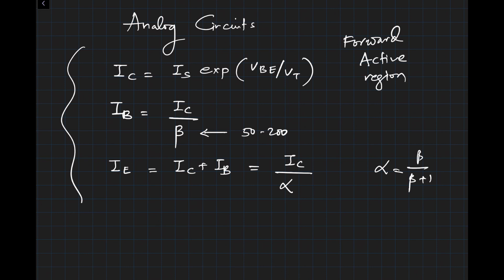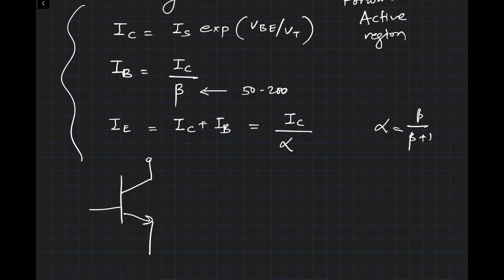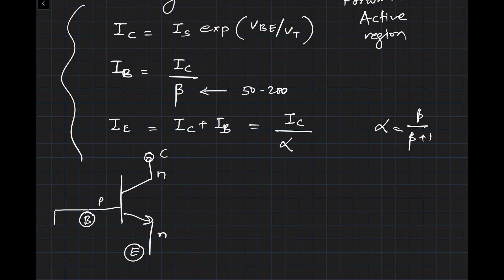What does the forward active region mean? To recap: we have collector, base, and emitter with N-P-N doping. The base-emitter junction is forward biased. Based on this, we are going to write the large signal equivalent model for the NPN transistor.